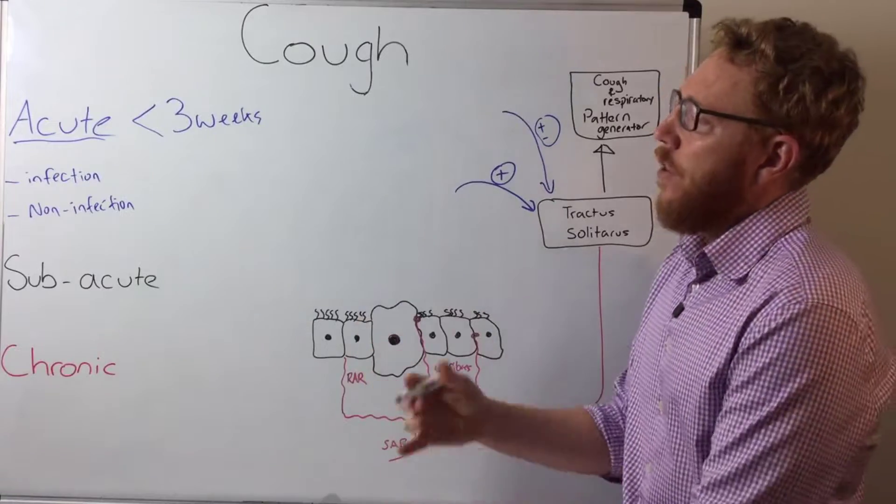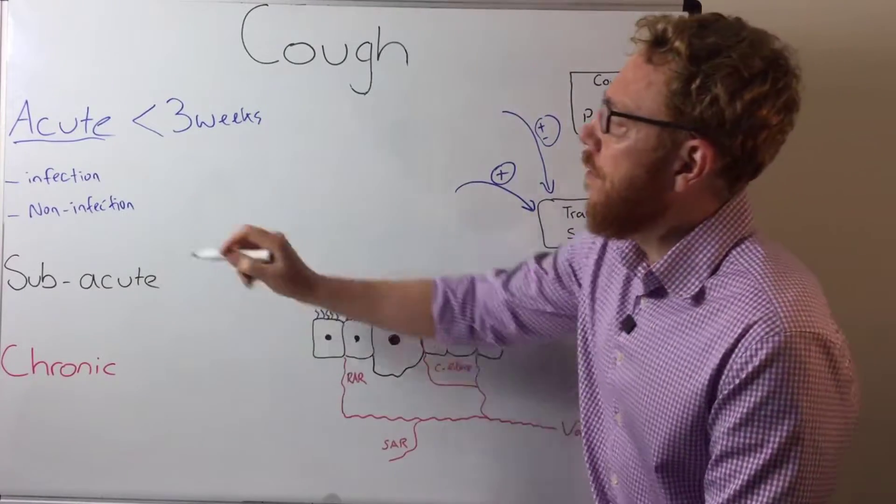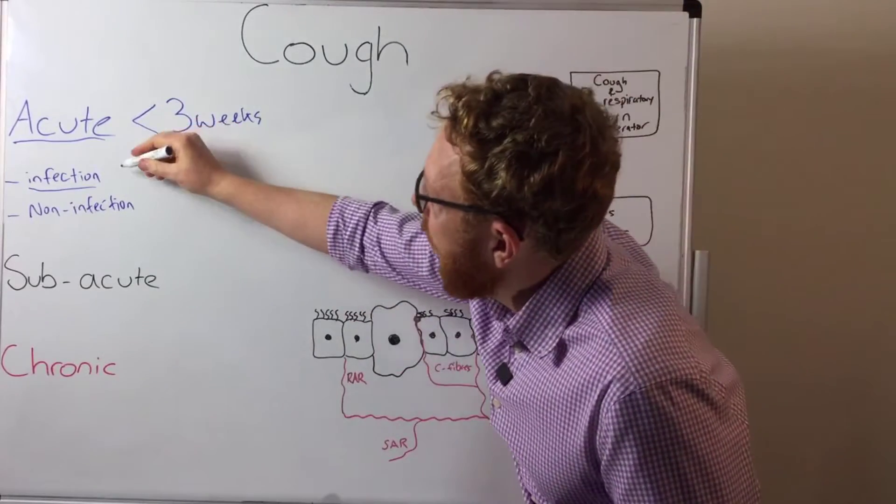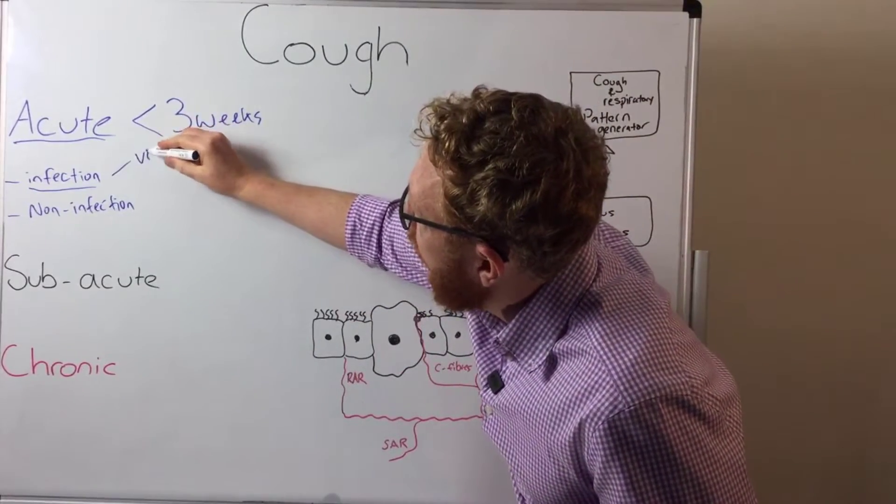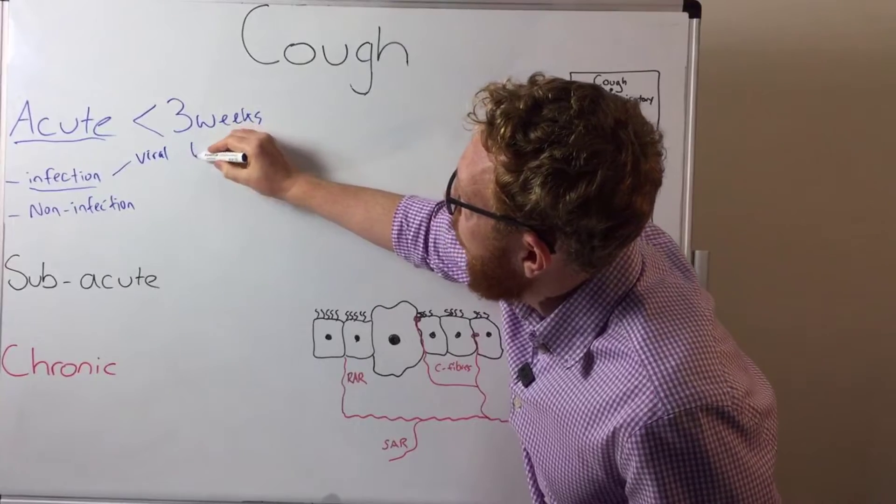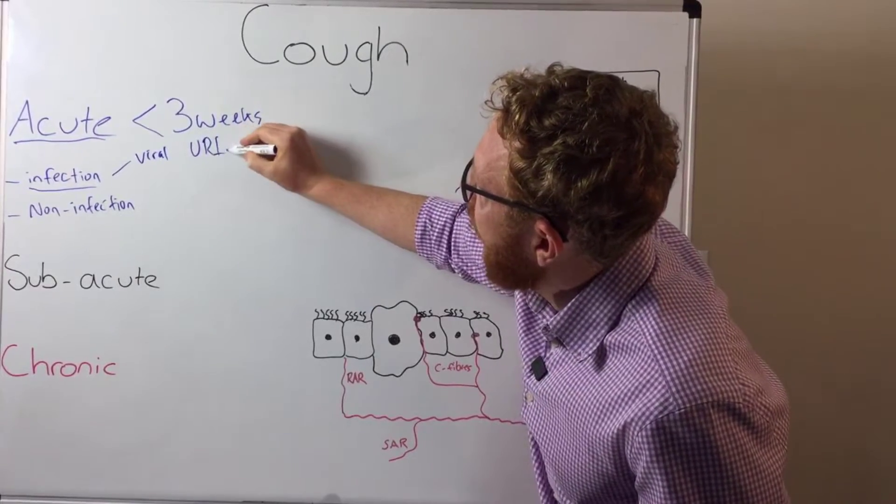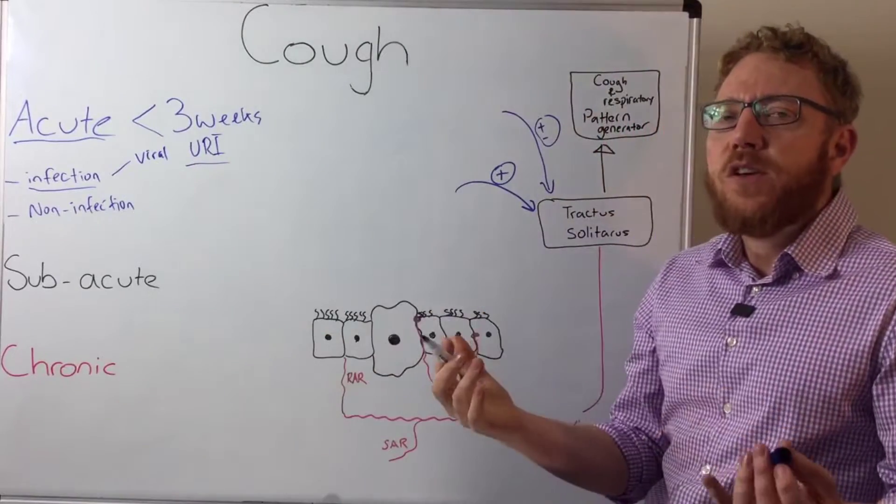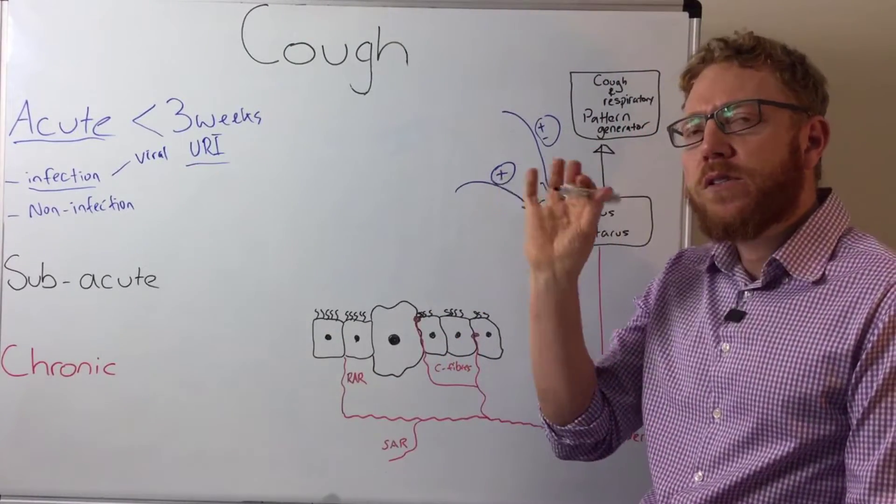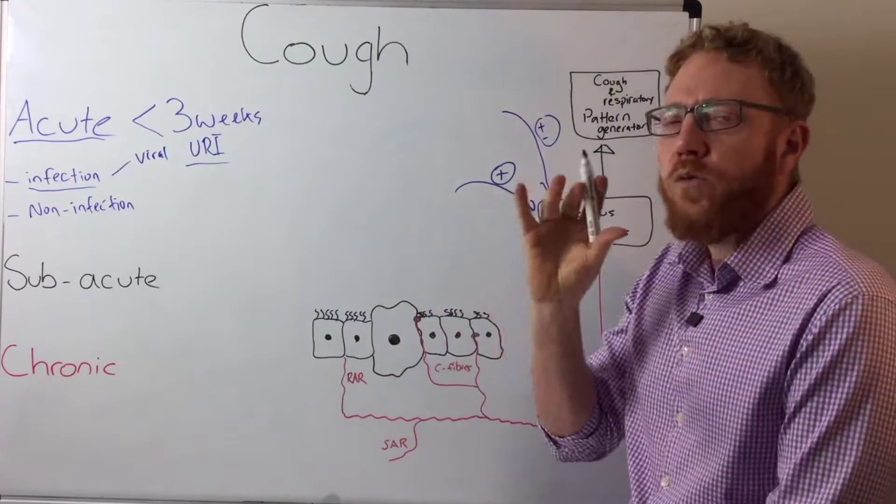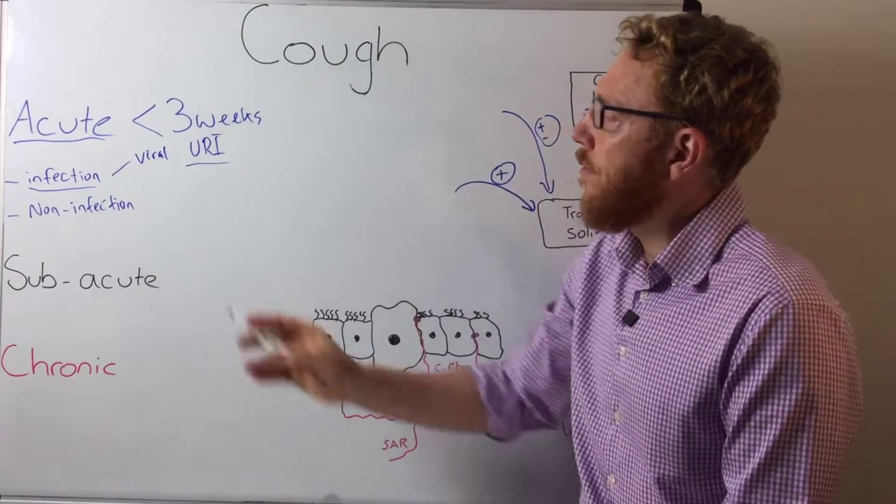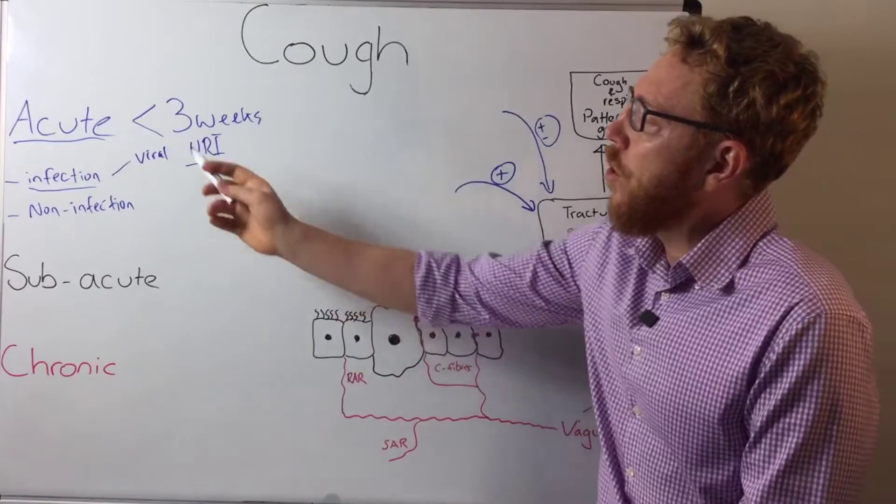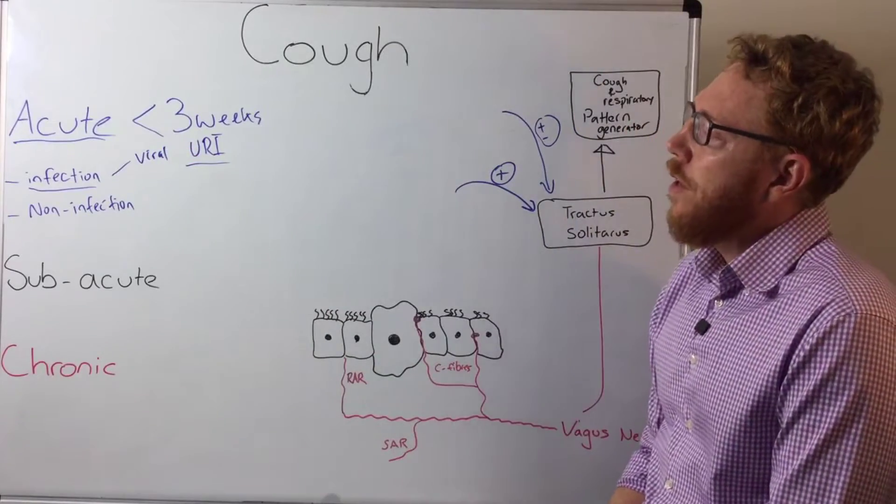By far the most common cause of an acute cough is infectious based. And by far the most common is viral, which is upper respiratory infections. Quite commonly it's going to be the common cold, rhinosinusitis. Rhinosinusitis from a viral origin is the common cold and by far that's the most common cause of an acute cough.